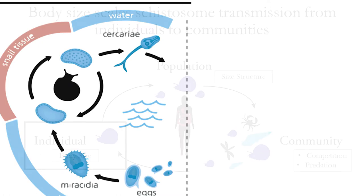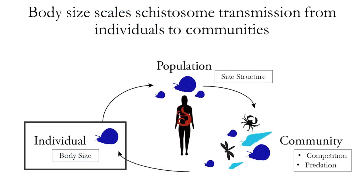In this system, body size turns out to be a really key trait. At the individual level, body size can impact exposure and susceptibility, which when looking at different snail populations with different size structures has the potential to impact transmission. The greater ecological community, through mechanisms such as competition and predation, may in fact be feeding back on this individual trait of body size — all of which comes back to human risk of disease. This slide will serve as an outline as I do a quick drive-by at every scale.